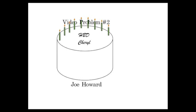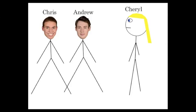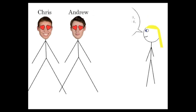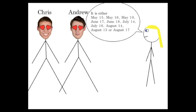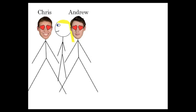So it starts with these two guys, Chris and Andrew, and they meet this girl Cheryl. They ask her when her birthday is because they want to plan a party or buy her presents and impress her. And instead of just telling them like a normal person, Cheryl gives them 10 possible days that her birthday could be. Then she walks over to Andrew and whispers the day in his ear, and then she whispers the month in Chris's ear.